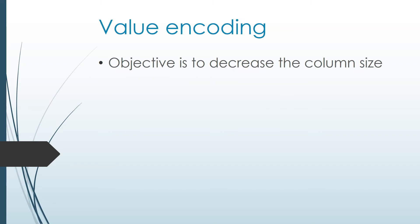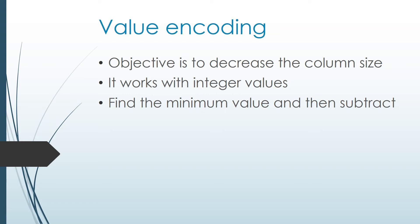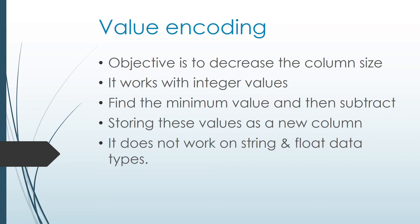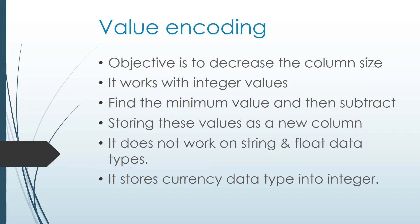The first technique is value encoding. The objective is to decrease the column size. It works with integer values. What we have to do is first find the minimum value, then subtract that value from all available values. We then store these values as a new column, because the size of the new column will be smaller compared to the original. Note that value encoding does not work on string and float data types — it converts currency data types into integers.